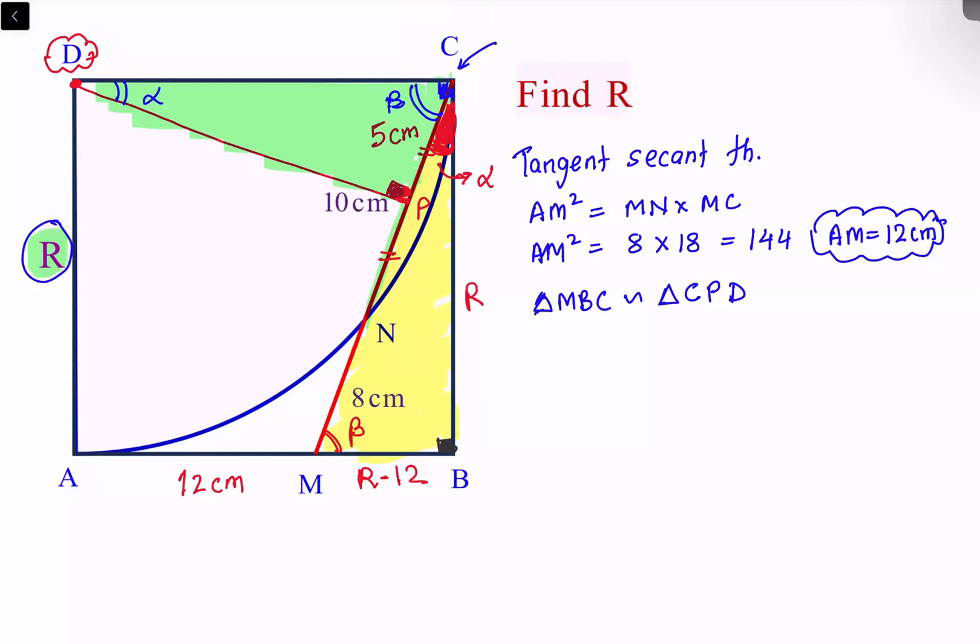How about the green triangle? In the green triangle we know BP is 5 centimeters—we have just calculated—and DC is R.